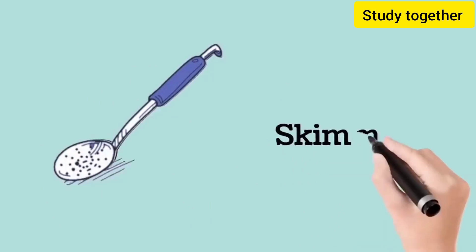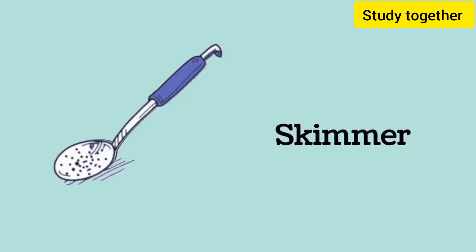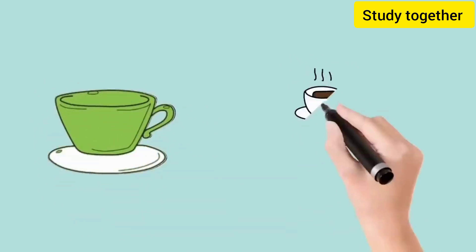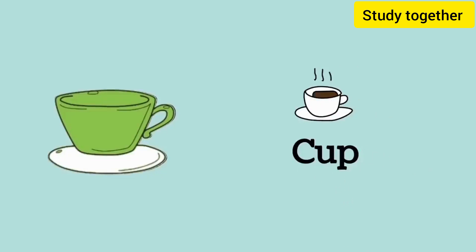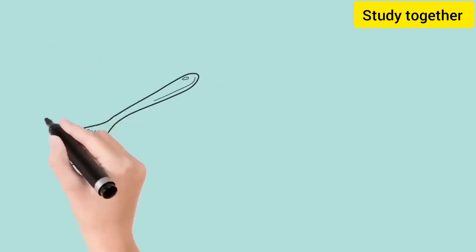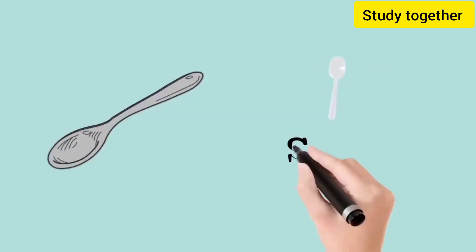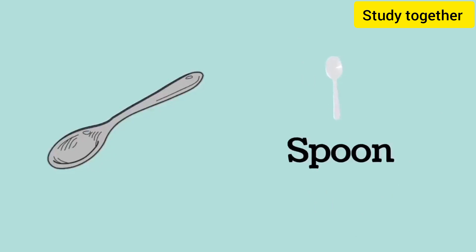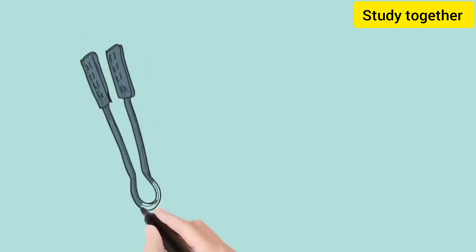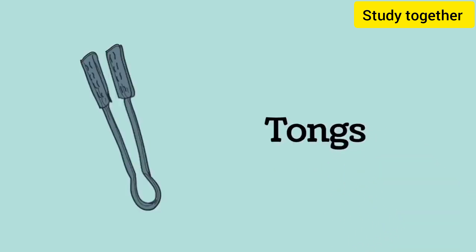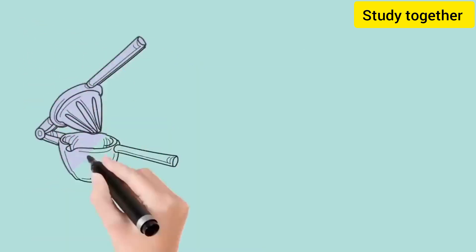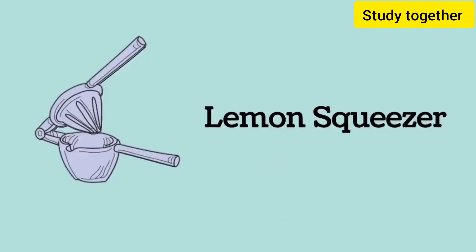This is a cup, we call it cup. This is a spoon, we call it spoon. This is tongs, we call it tongs. This is a lemon squeezer, we call it lemon squeezer.